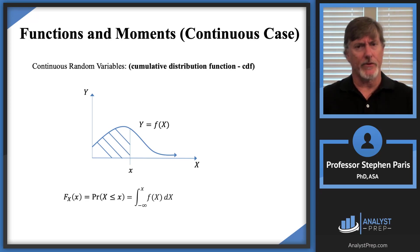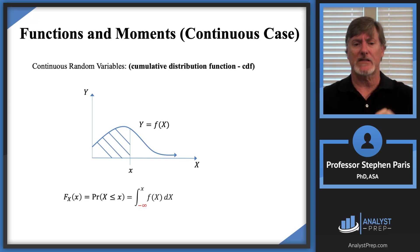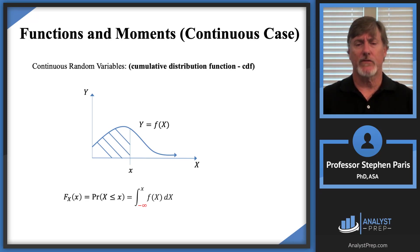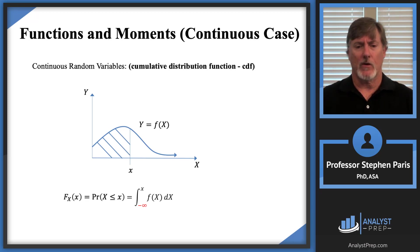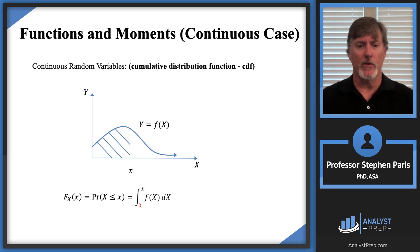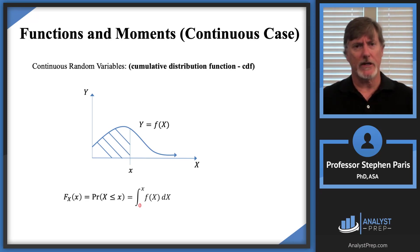I want to focus on the minus infinity as the lower limit of integration. Generally that's what it is. The graph I have shown is for a random variable defined for positive values of cap X, but there's no reason the random variable can't take negative values. In this particular example, the negative infinity would actually be replaced with zero. But generally speaking, there's no reason for random variables not to have negative values, and we're going to see plenty of random variables that can have negative or positive values.